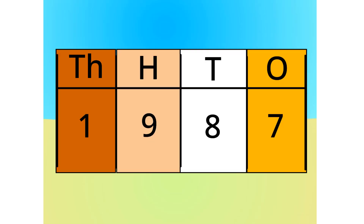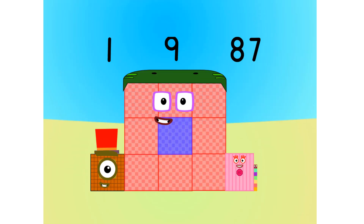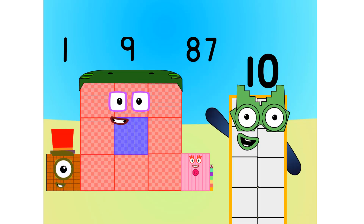All right. Let's split it into its units. This number is made up of 1 nine-hundreds, 8 tens, and 7 ones. See? Let's see this in block form, shall we? As you can see, this number is 1 nine-hundred, 8 tens, and 7 ones.